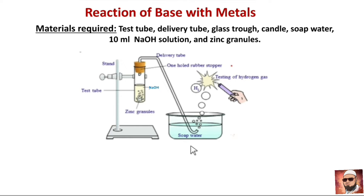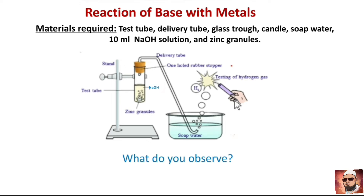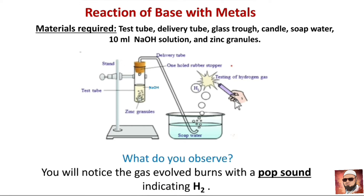Arrange the apparatus as shown in the figure. Take 10 ml of sodium hydroxide (NaOH) in the test tube and add a few granules of zinc. Gas bubbles form on the surface of the zinc granules. Pass that gas through soap water with the help of a delivery tube. Gas-filled bubbles rise into the air. Bring the burning candle near the gas-filled bubbles. You will notice that the gas evolved burns with a pop sound, indicating hydrogen gas.